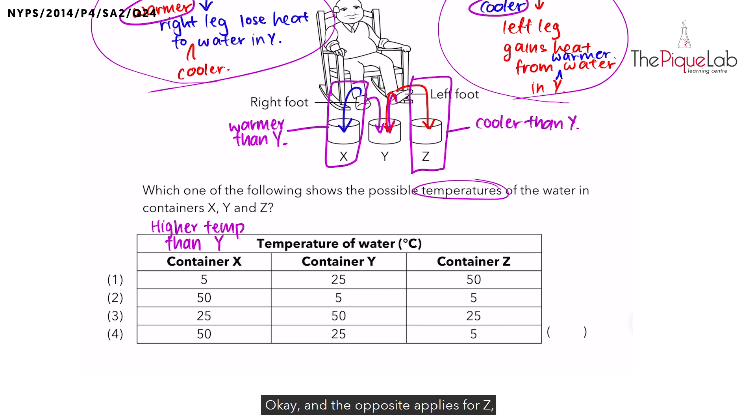Okay, and the opposite applies for Z. If it's cooler than Y, we are looking for a lower temperature than Y. So I should observe a smaller number than Y. Now in that case, you should be able to get your answer. The only possible answer is number four. Why? Because 50 degrees Celsius for container X is larger than 25 degrees Celsius of container Y. And then 5 degrees Celsius of container Z is smaller than 25 degrees Celsius of container Y. So the answer is number four.